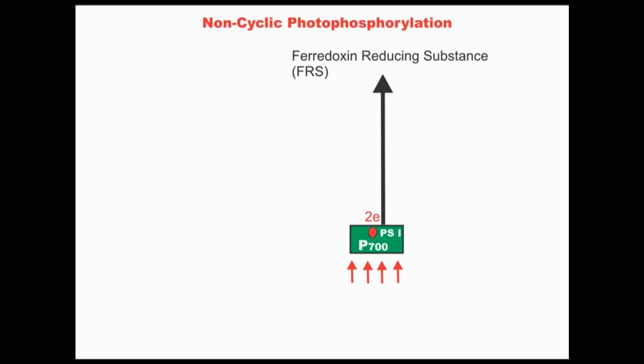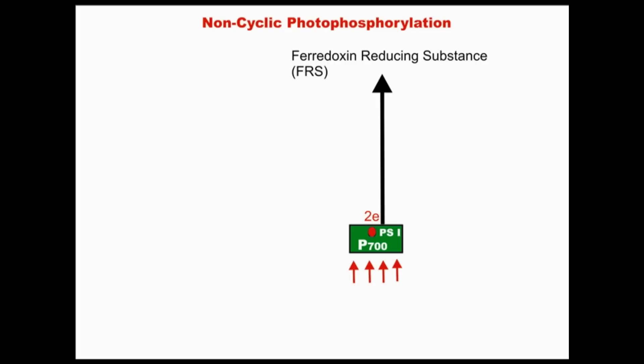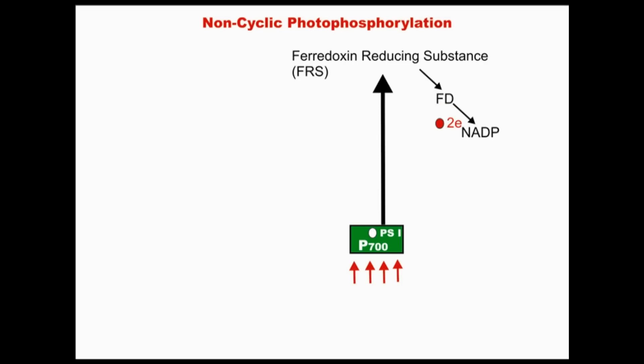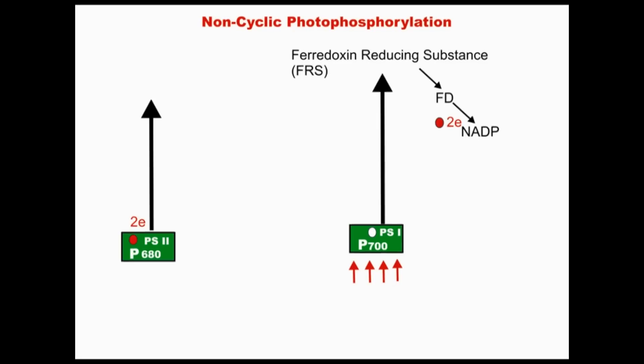Non-cyclic photophosphorylation starts with photosystem I. Light rays strike photosystem I, which releases two electron molecules. These molecules are accepted by ferredoxin-reducing substance and then transferred to ferredoxin. Photosystem I has lost its electrons and is ready to accept electrons from photosystem II.